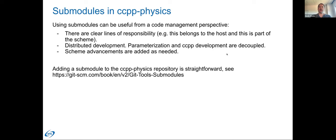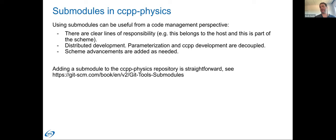Submodules make a clear distinction of where the responsibility lies. When code is organized hierarchically into different repositories, it's easier to assign responsibility to different parties. Externally developed schemes can live in one repository whereas the coupling to the host lives above it. This allows for distributed development — parameterization and CCPP development are completely decoupled. The development can march on without CCPP having to incorporate it yet. And it makes it very clear what part is the scheme versus what is the coupling to the host. Adding a submodule to your repository involves just three or four steps.